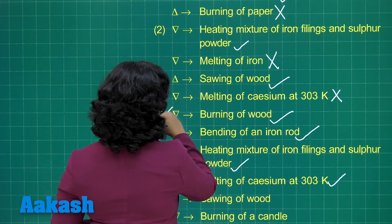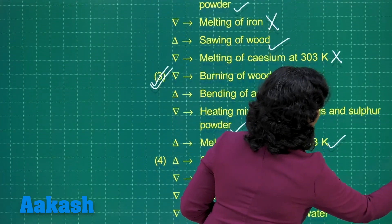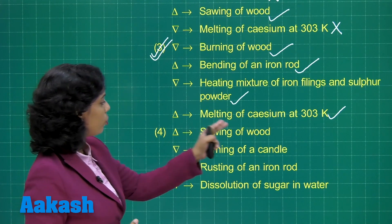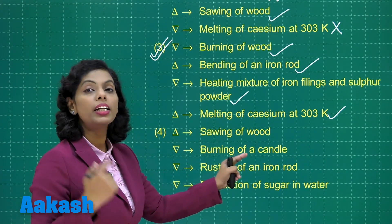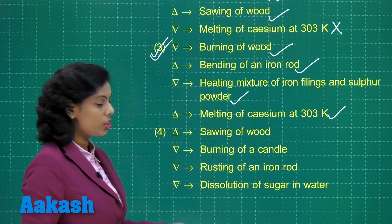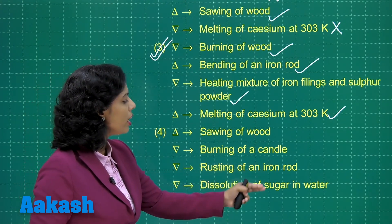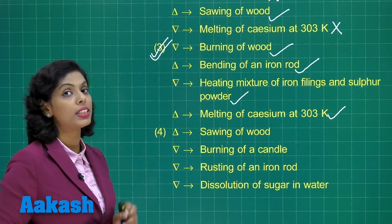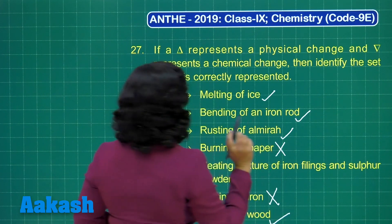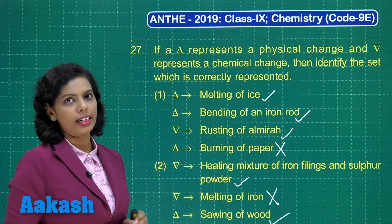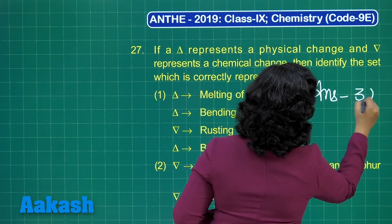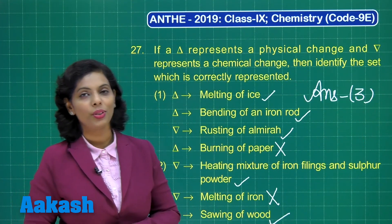Looking at the last option, you will not find all correct answers there. Sawing of wood is a physical change; burning of a candle includes both physical and chemical changes; rusting of an iron rod is a chemical change; and dissolution of sugar in water is a physical change — so option 4 is not fully correct. Therefore, for this question, option 3 is the correct answer.